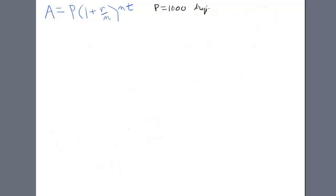Say we want it to triple, and say it's compounded quarterly, compounded quarterly, and let's say the rate is 12%.